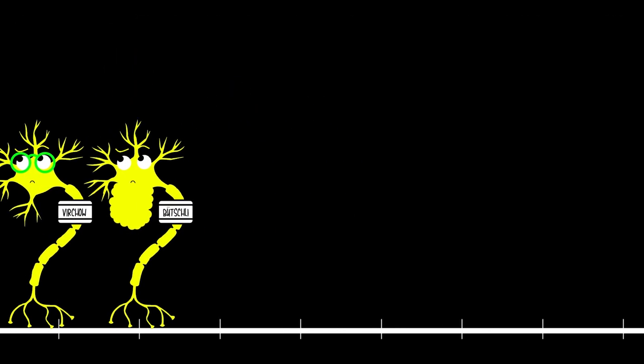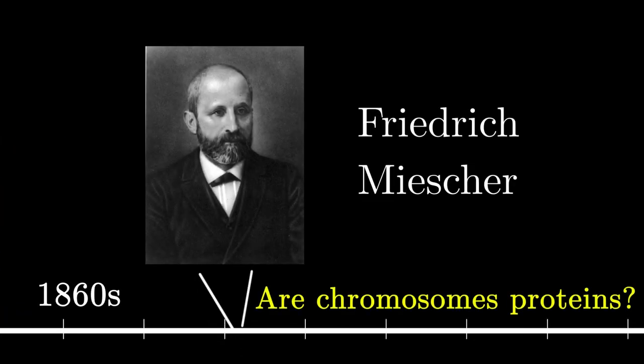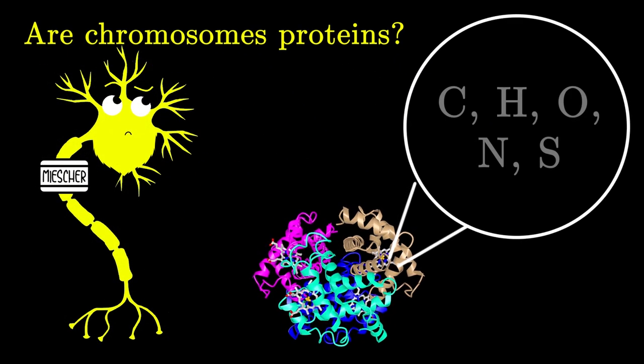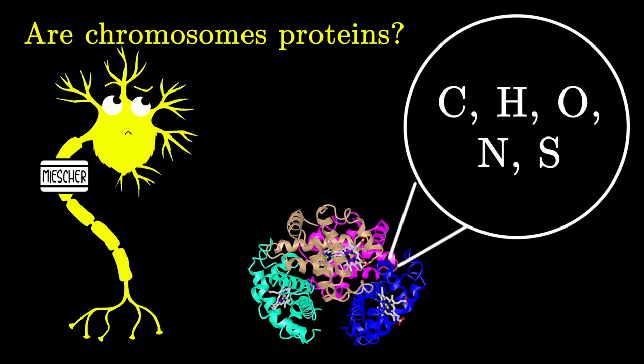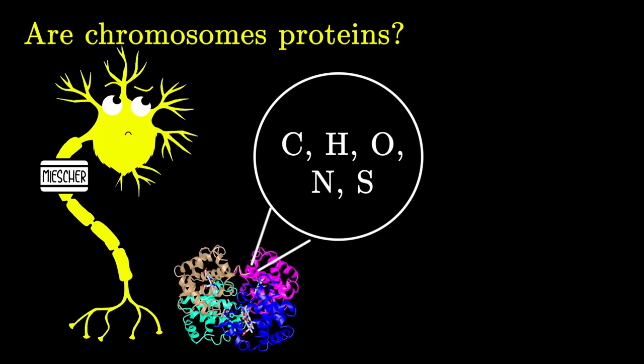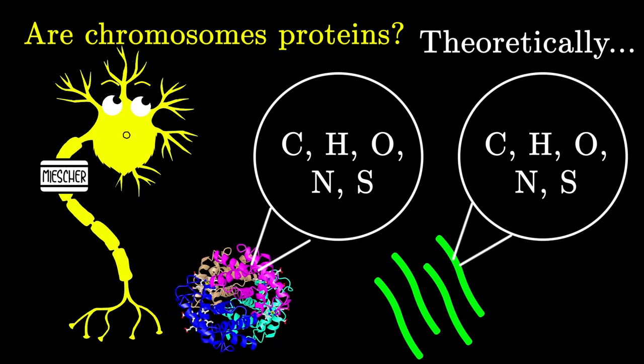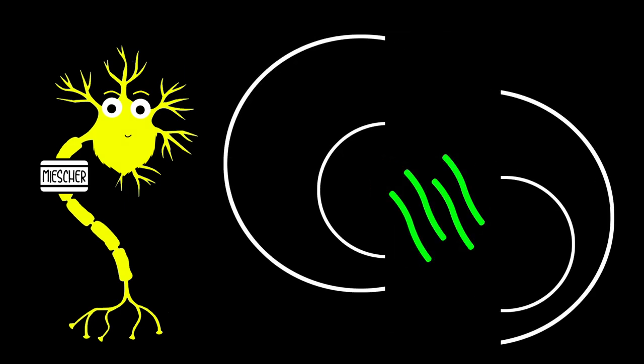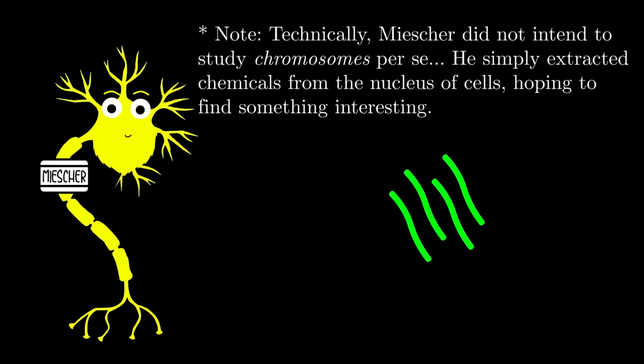It wasn't until 1869 when Dr. Frederick Miescher actually tested to see whether chromosomes were, in fact, proteins. Miescher knew that proteins were made of carbon, hydrogen, oxygen, nitrogen, and sometimes sulfur. So he reasoned that if chromosomes were indeed proteins, then they too would have these same elements. So he tested it. He extracted a pure sample of chromosomes by grinding up cells, breaking them open, and using some salts and acids to isolate the chromosomes.